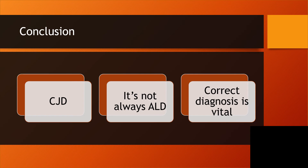In conclusion, it is very vital to get the correct diagnosis, because CJD is CJD — it is not Alzheimer's disease. Correct diagnosis will help guide management. Kindly subscribe to the channel so that you can get these presentations immediately they are published. Thank you.